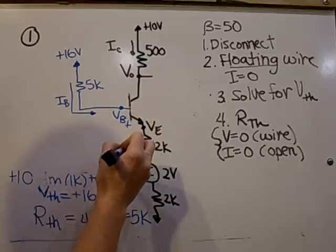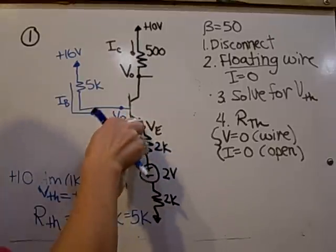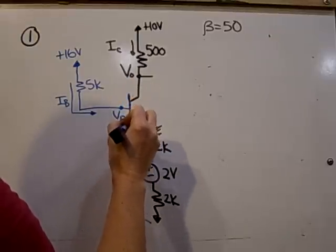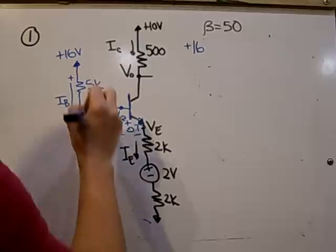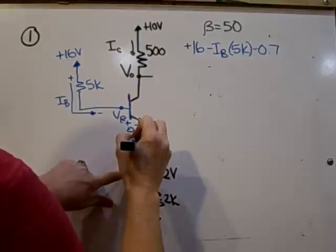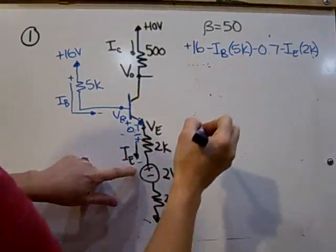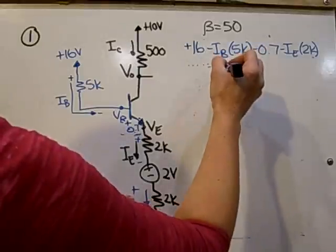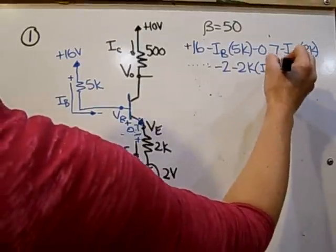Now solving for the currents, always take a loop from the base through to the emitter. We know that there's a 0.7 drop between VBE. So the loop goes from plus 16, and then this is plus to minus, so minus IB times 5k, minus 0.7, and then this is plus to minus, so minus IB times 2k, and minus 2, again the current here is plus to minus 10 volts, so minus 2 minus 2k times IB, and then a plus 10. And that's all equal to 0.